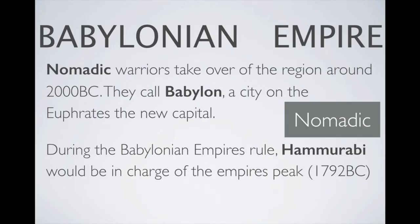Following Sargon's empire, another empire was built by the Babylonians. They were nomadic warriors — nomadic meaning they were not settled in one place. Their most famous ruler was Hammurabi, who was in charge around 1800 BC during the empire's peak.